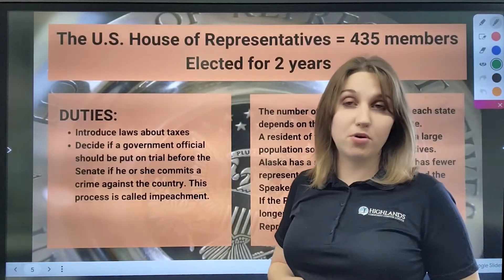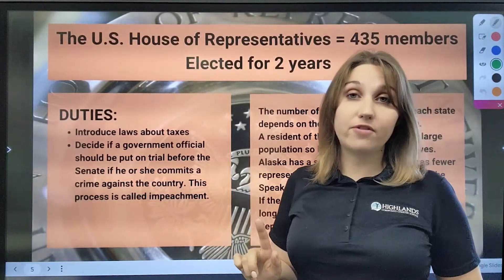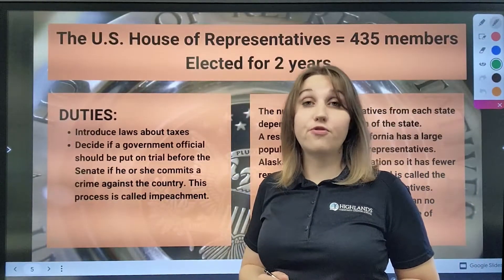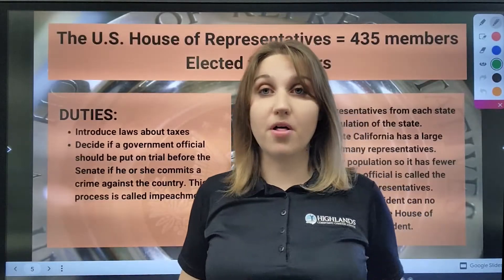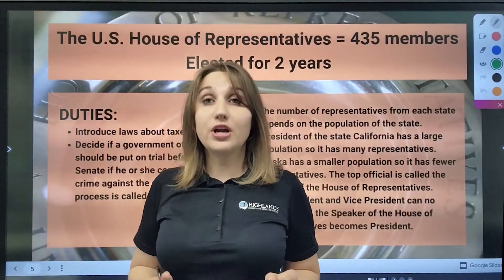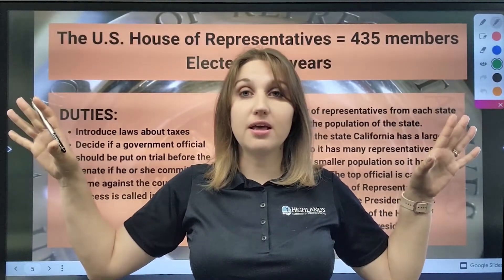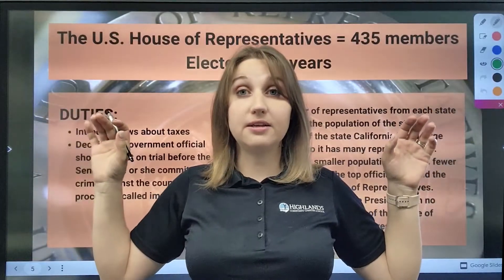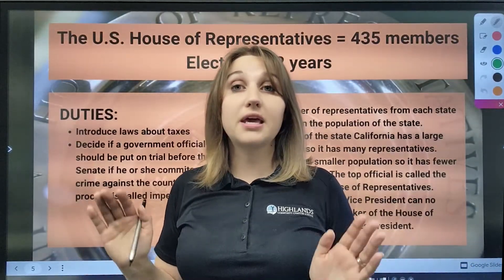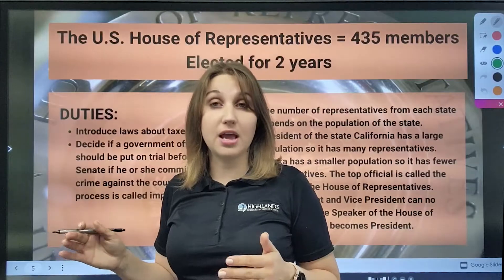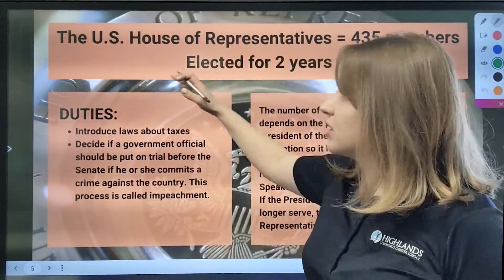The House of Representatives consists of 435 members, and every member is elected for two years. The number of representatives from each state is different — it all depends on the number of people that reside in the state. For example, comparing Alaska and California, California has more representatives because its population is bigger.